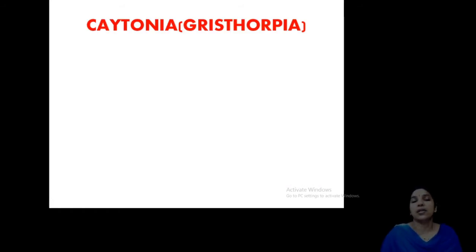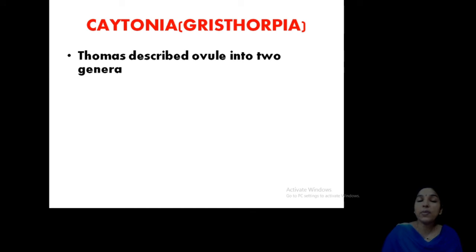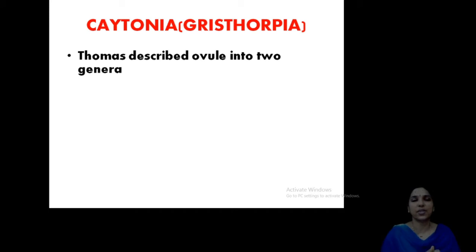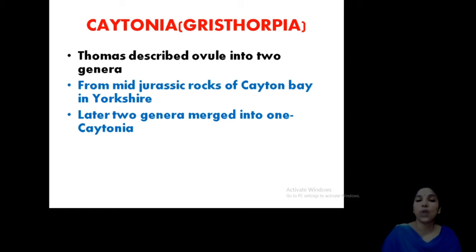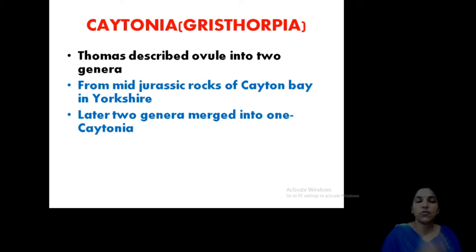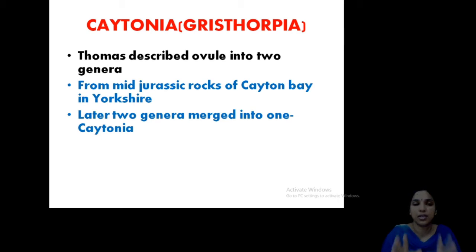The very important part that you have to study in your syllabus is Chitonia, also known as Chitopia. Thomas described that members of Chitonia showed two different types of ovule genera. They were first observed in the Middle Jurassic rocks of Kinson Bay — Kinson being a place in Yorkshire — and the term Chitonia came from that Kinson Bay. Later these two genera were merged into one, that is Chitonia.